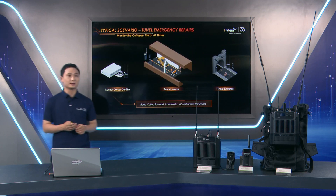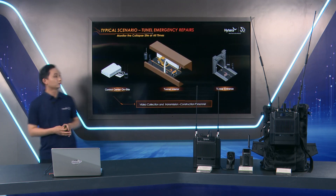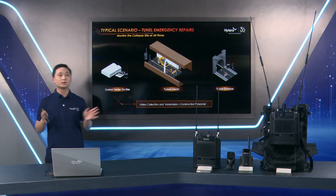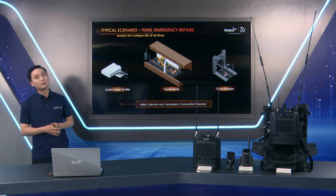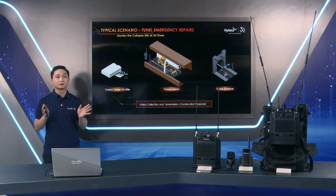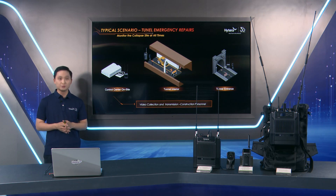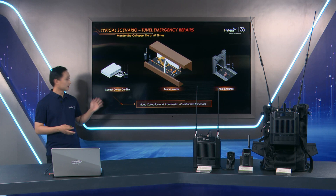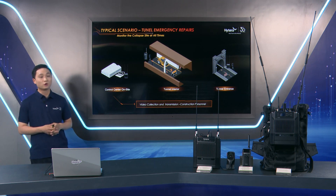Another typical scenario is tunnel emergency repair. When a dangerous situation happens in a tunnel, we can use PNE 380 equipment for monitoring in narrow spaces. We can also use PNE 580 equipment to monitor at a tunnel entrance that may collapse at any time, to ensure safe work.